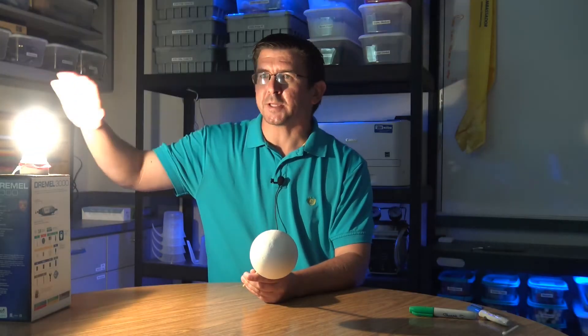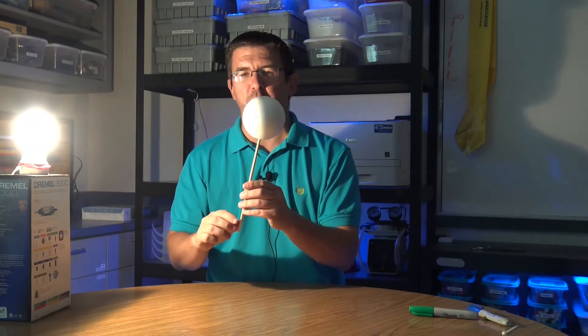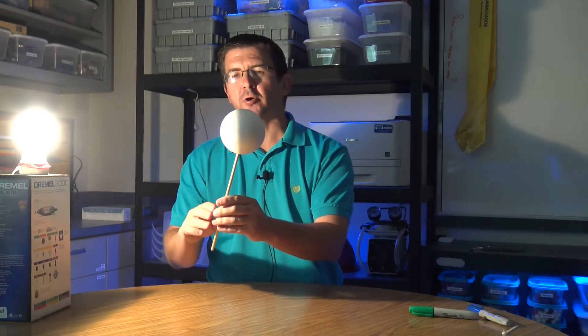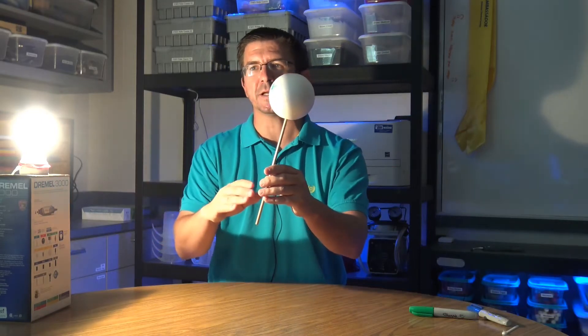So again, the light's representing the sun. The ball is representing the Earth. The dowel rod is representing the Earth's axis. And we're going to start out, right now our X is facing the sun.